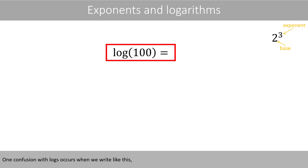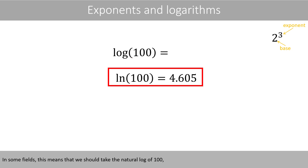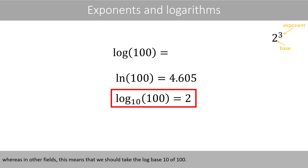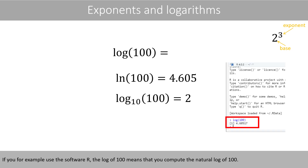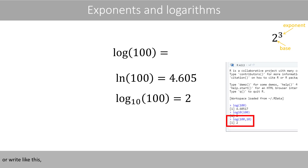One confusion with logs occurs when we write like this, because we do not say which base it is. In some fields, this means that we should take the natural log of 100, whereas in other fields, this means that we should take the log base 10 of 100. If you, for example, use the software R, the log of 100 means that you compute the natural log of 100. To change the base, we just add the corresponding number after the log, or write like this, where we place the base here.